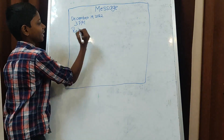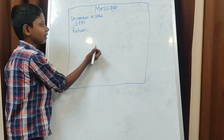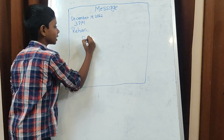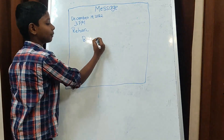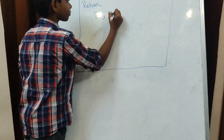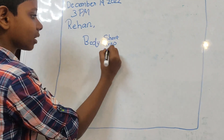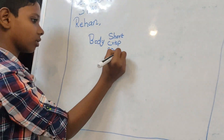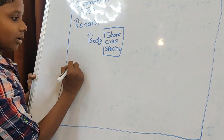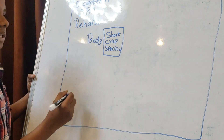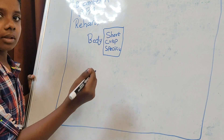After the receiver's name, we should have the body. The body should be short, crisp, and specific — that is what the content should be like. The word limit is usually 50 to 100 words, and in your question paper you will be given the specific word limit.